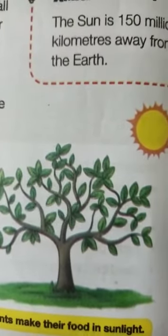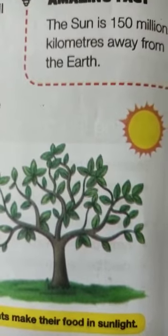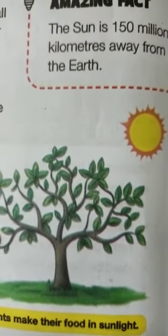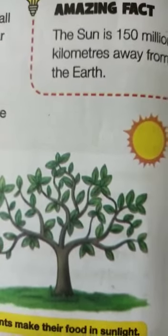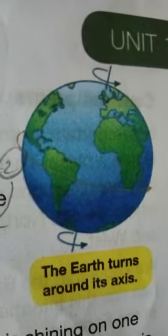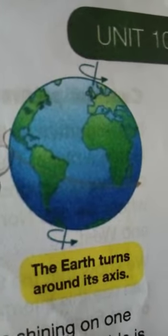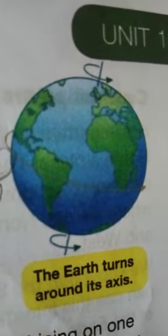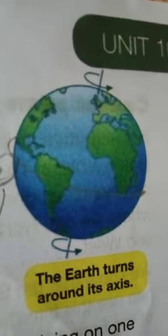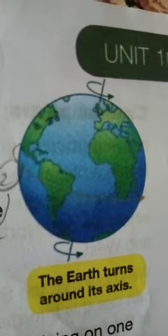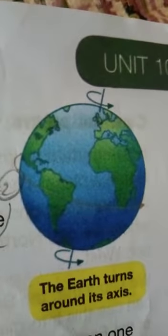About day and night: during daytime, the light of the Sun falls on the Earth, but we cannot see the Sun at night. The Earth is turning on a point called its axis. The Earth turns round once in 24 hours, and the turning of the Earth on its axis causes day and night.